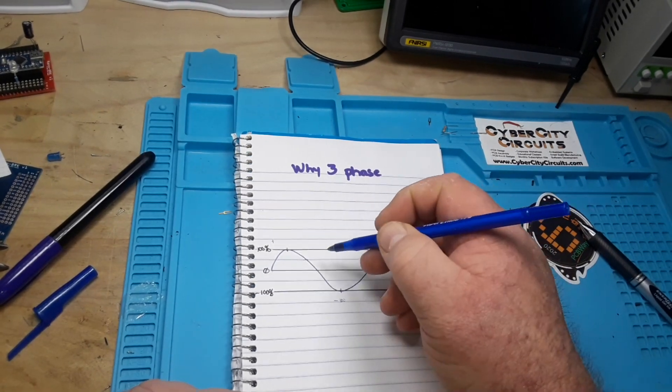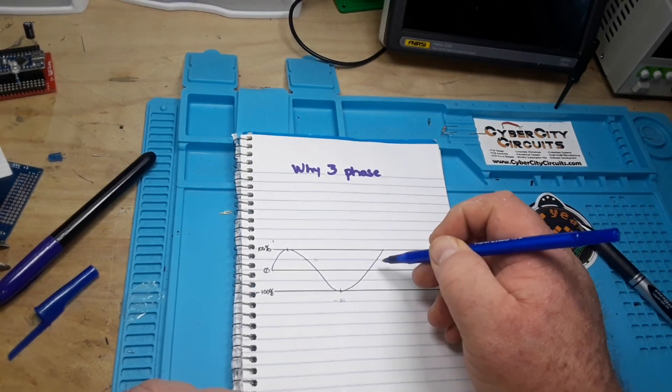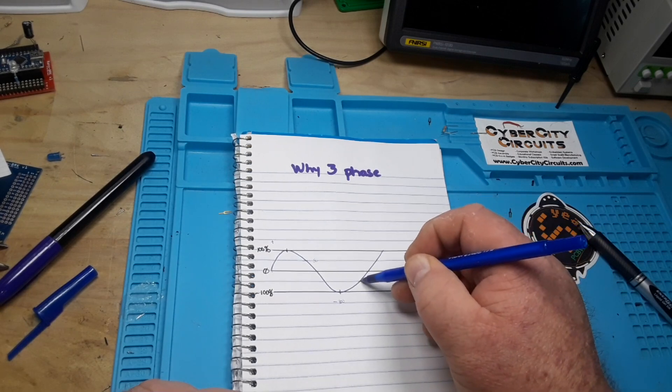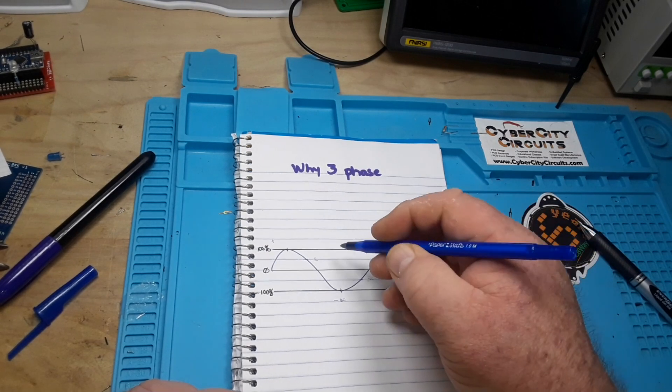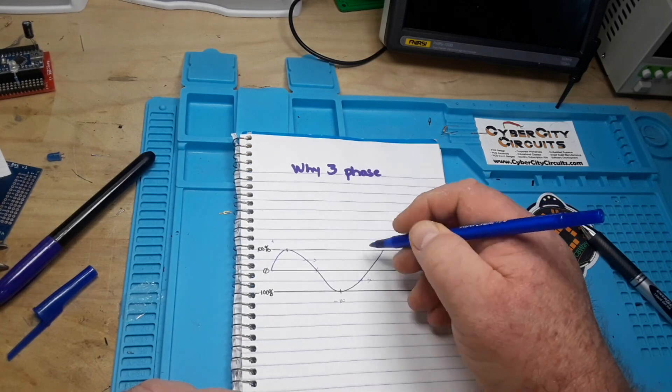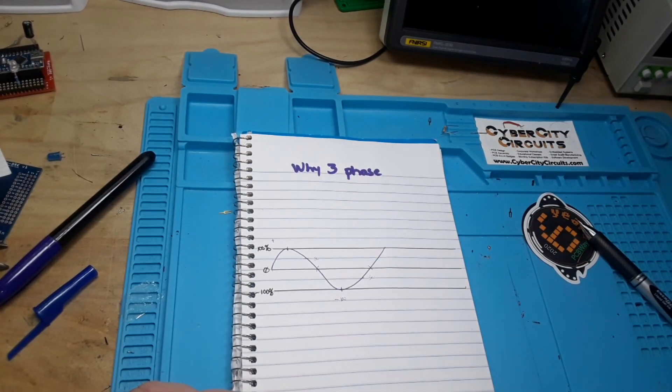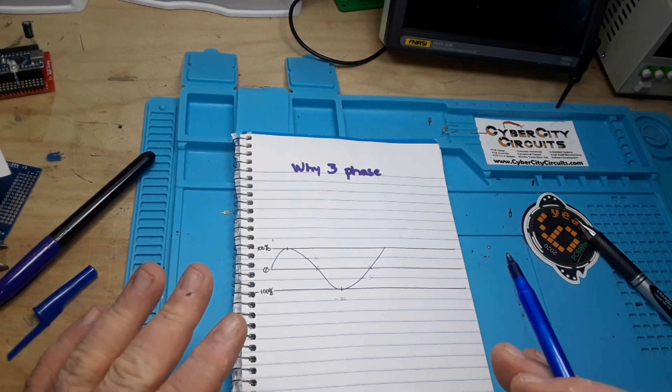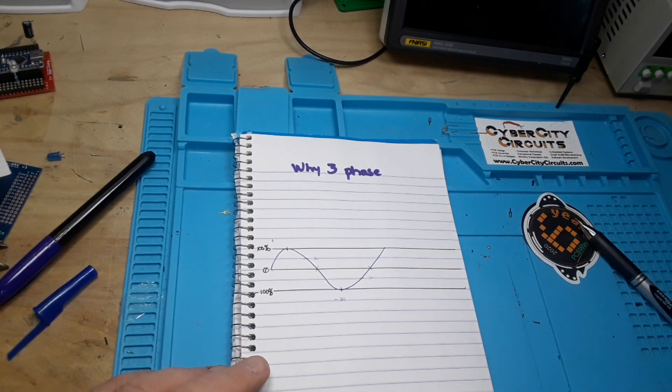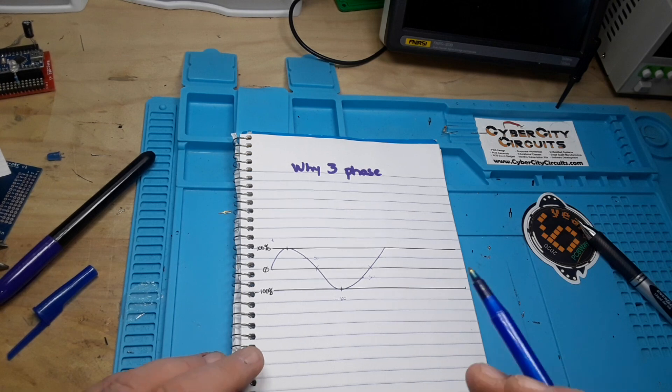Correspondingly you would have 50 percent power here and 50 percent power here, but at this point right here, those two points in the sine wave, you have zero power, none. So what they do in three-phase is they add two more phases to the power and it's going to help even things out.